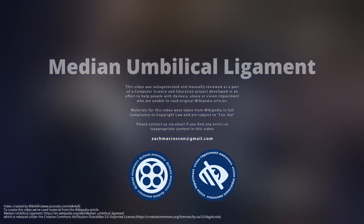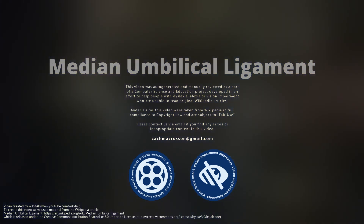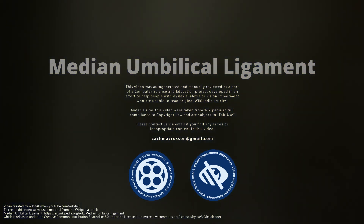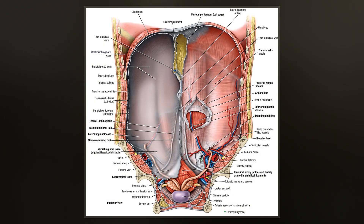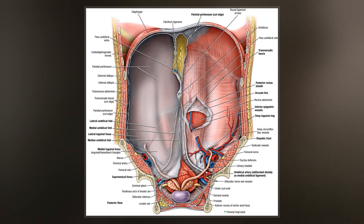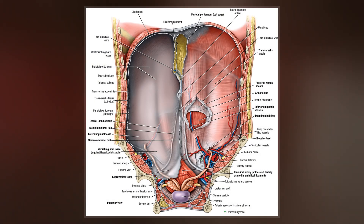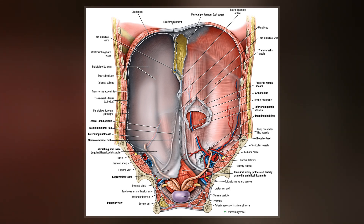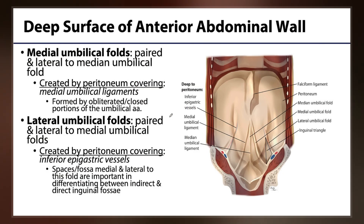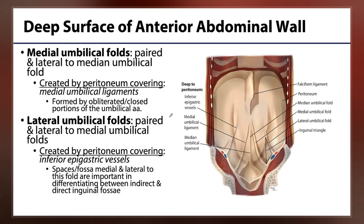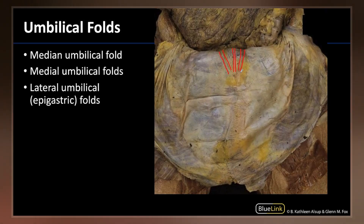The median umbilical ligament is an unpaired ligamentous structure in human anatomy. It is covered by the median umbilical fold. It extends from the apex of the bladder to the umbilicus, on the deep surface of the anterior abdominal wall. It is a fibrous piece of tissue that represents the remnant of the fetal urachus.